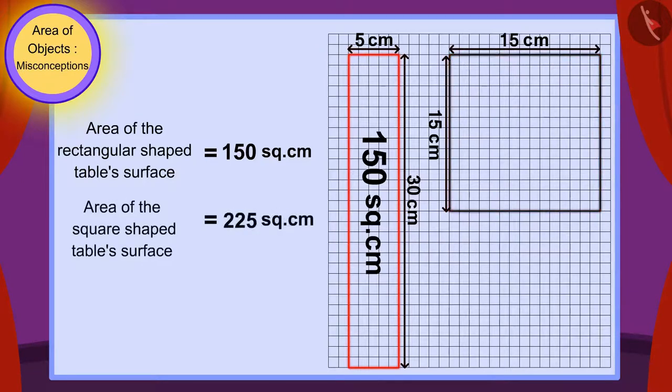And, there are 225 squares in the square-shaped table surface. Or, the area of the square-shaped table surface is 225 square centimeters.